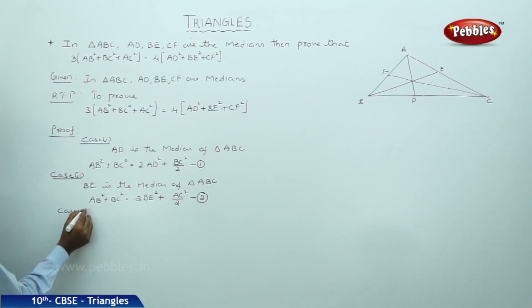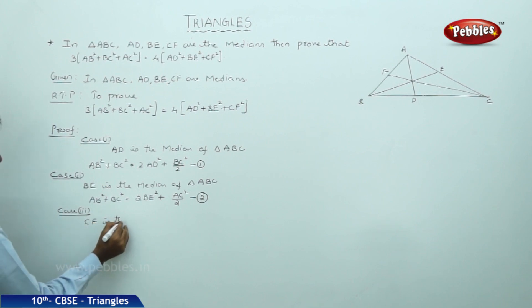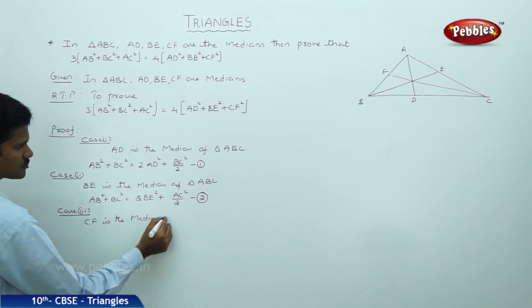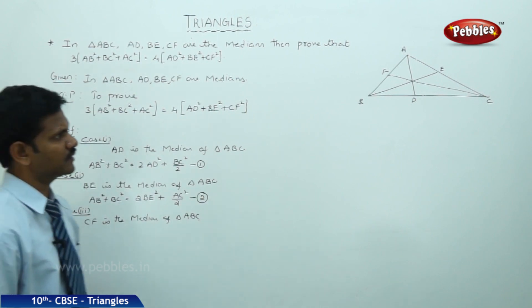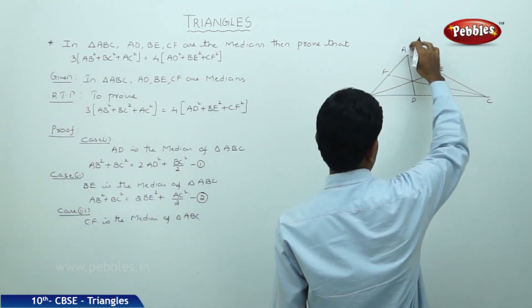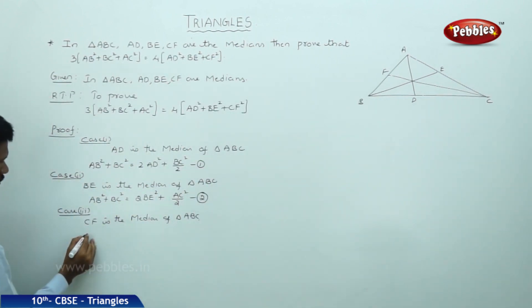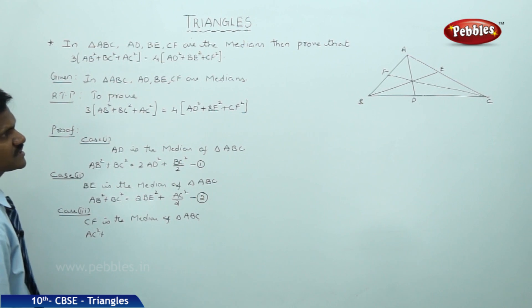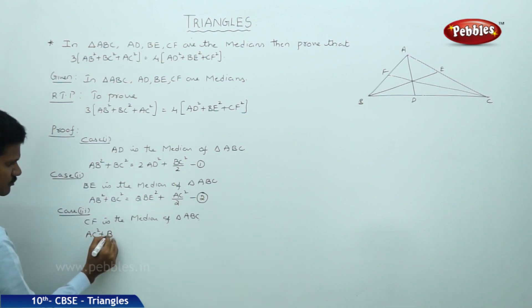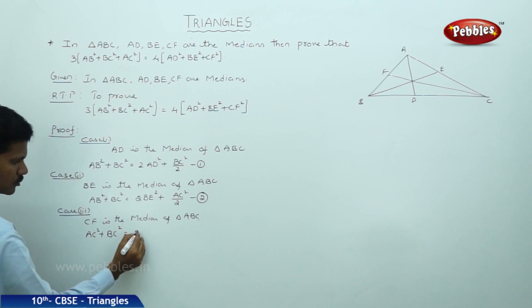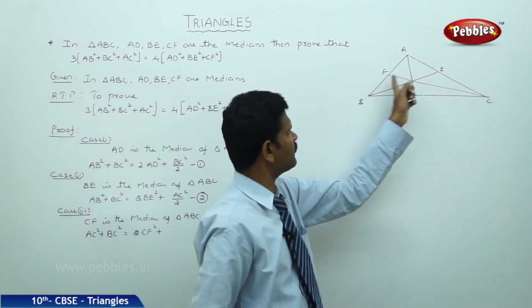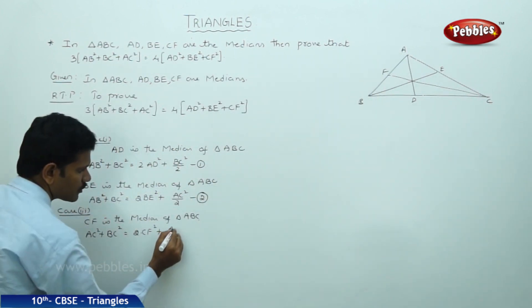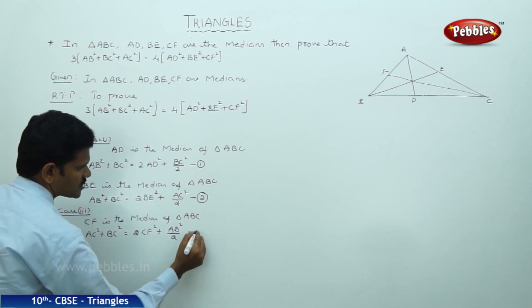Case 3: CF is the median. Then BC² + AC² = 2·CF² + AB²/2. This is equation 3.